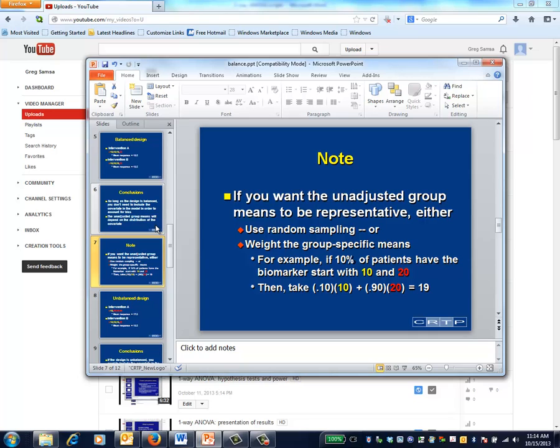If you want the unadjusted means to be representative, you could use simple random sampling, in which case the distribution of biomarker in your sample is expected to be similar to the distribution of the underlying population.